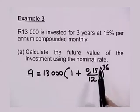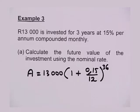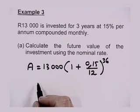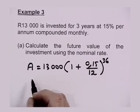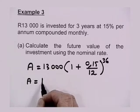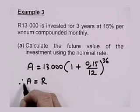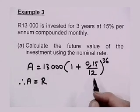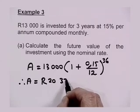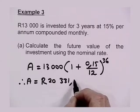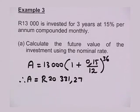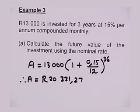36 — very, very important. So let's see what we get. We can use our calculator and it gives us an answer of 20,331.27.